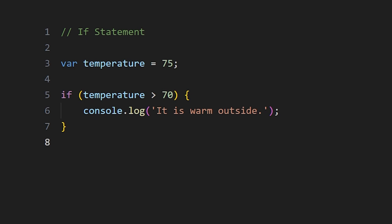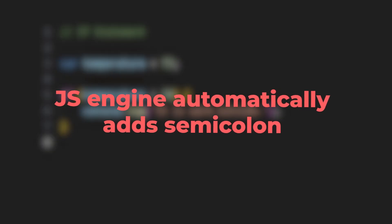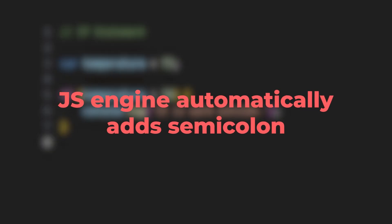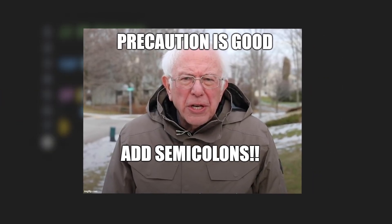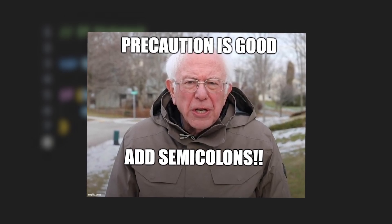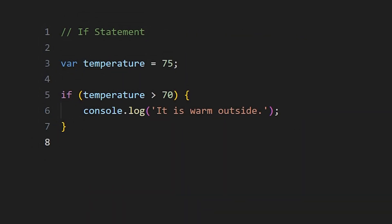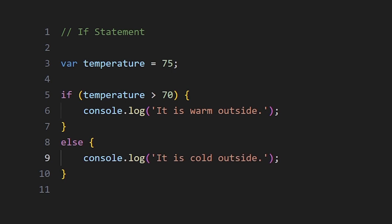You may notice that I'm using semicolons. Semicolons are not mandatory in JavaScript because the JS engine automatically adds them when running the code. However, it is good practice to add them because sometimes the JS engine can make mistakes. We can also add an else statement to our if statement — the code in else runs when the if condition is false.